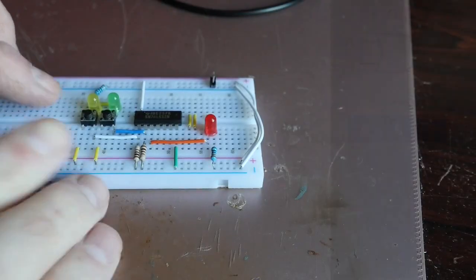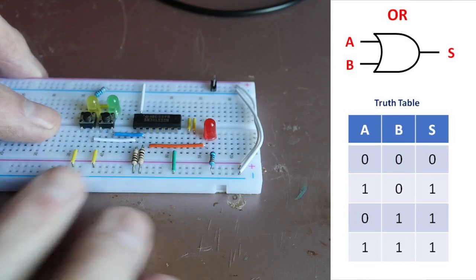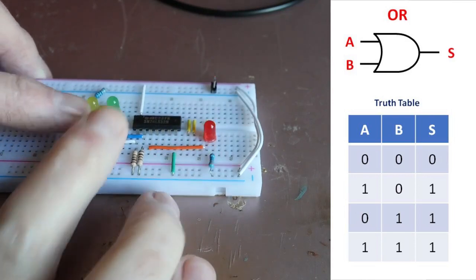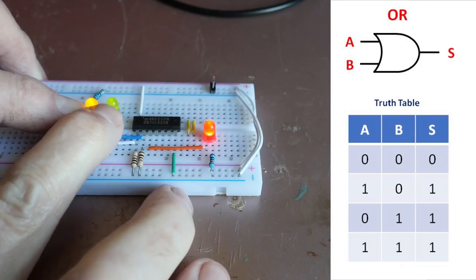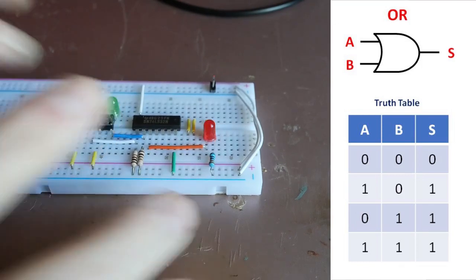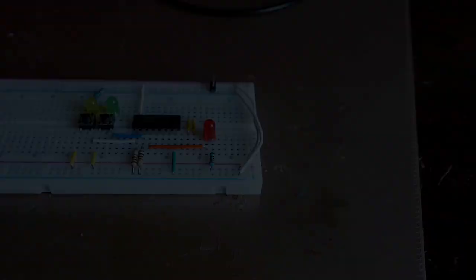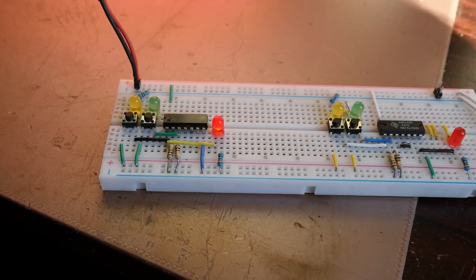The OR gate. So with both inputs low the output is low, with either of the inputs high the output goes high, and with both inputs high the output is high again. That's the OR gate. This is the setup for the NOR gate.